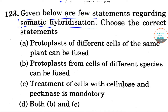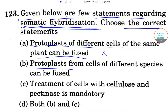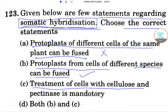Moving to the next question about somatic hybridization. We are given a few statements and have to choose the correct one. Statement A - protoplasts of different cells of the same plant can only be fused - that is wrong. Statement B - protoplasts from cells of different species can be fused - that is correct. Statement C - treatment of cells with cellulase and pectinase is mandatory - that is also correct. Option D, both B and C, is the answer.